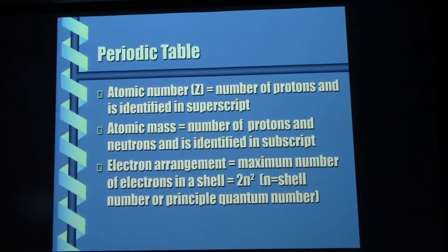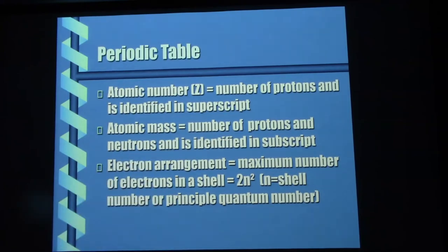For example, in the third shell — replacing n with 3 — 3 squared is 9, times 2 is 18. So we've gone 2, 8, 18. Who in the world engineered this? Why is it this way? I do not know — I wasn't invited to any of the design meetings. But I'm sure there had to be a reason for coming up with this scheme.